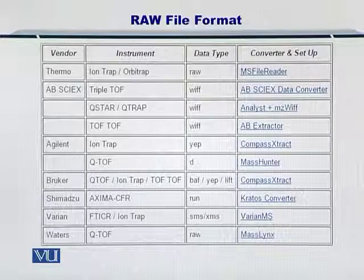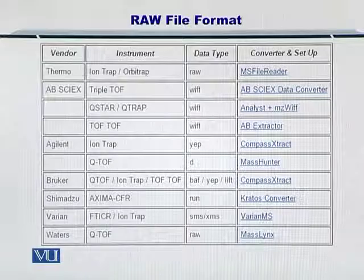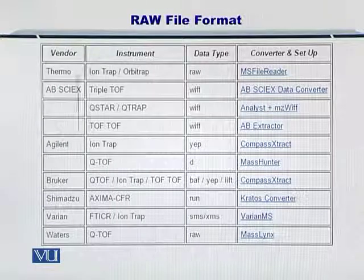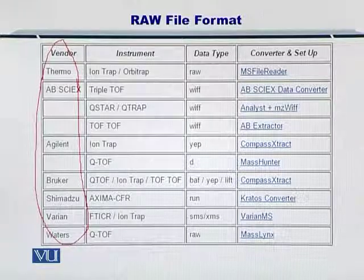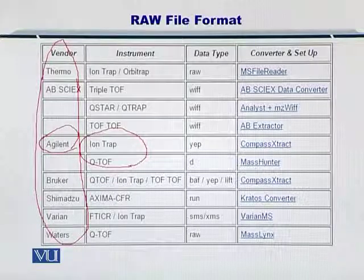There are multiple types of mass spectrometers and each one has its own unique strength and weakness due to the unique methodology it adopts in analysis of proteins and peptides. Here I have tabulated the vendor in one column, and for instance in the case of Agilent, this vendor makes two types of mass spectrometers: ion trap and QTOF, or quadrupole TOF time of flight. Each one of these mass spectrometers has its own raw file format.